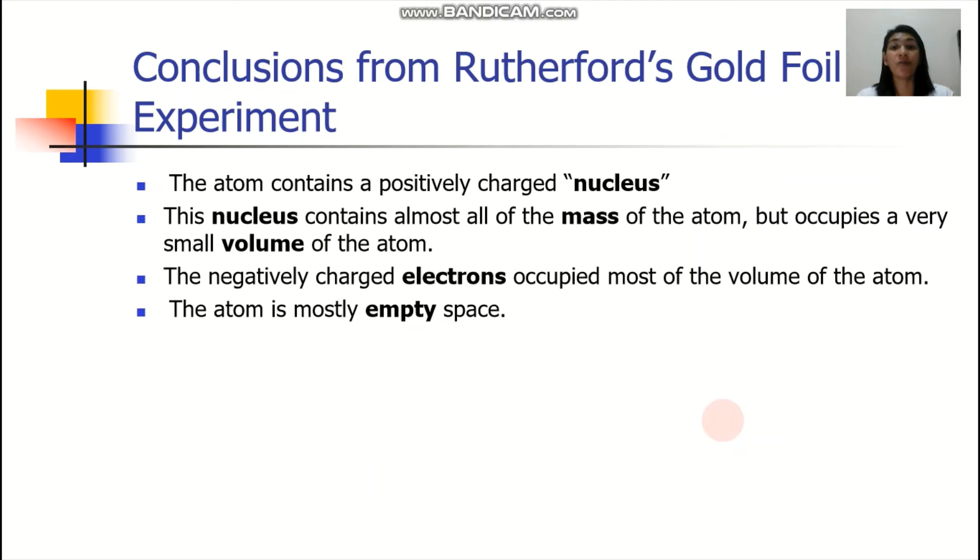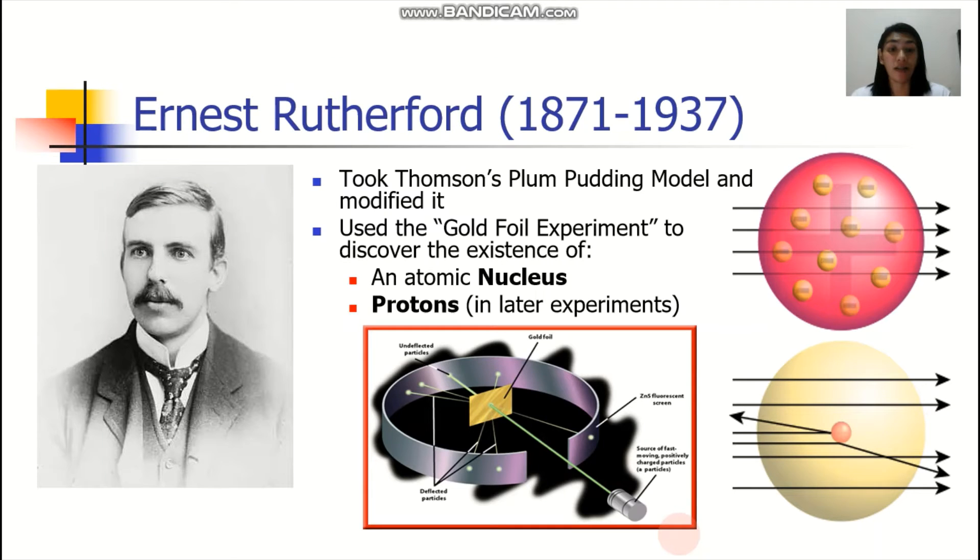From Rutherford's gold foil experiment, he concluded that the atom contains a positively charged nucleus. And that this nucleus contains almost all of the mass of the atom but occupies a very small volume of the atom. The negatively charged electrons occupied most of the volume of the atom. And he also concluded that the atom is mostly empty space.